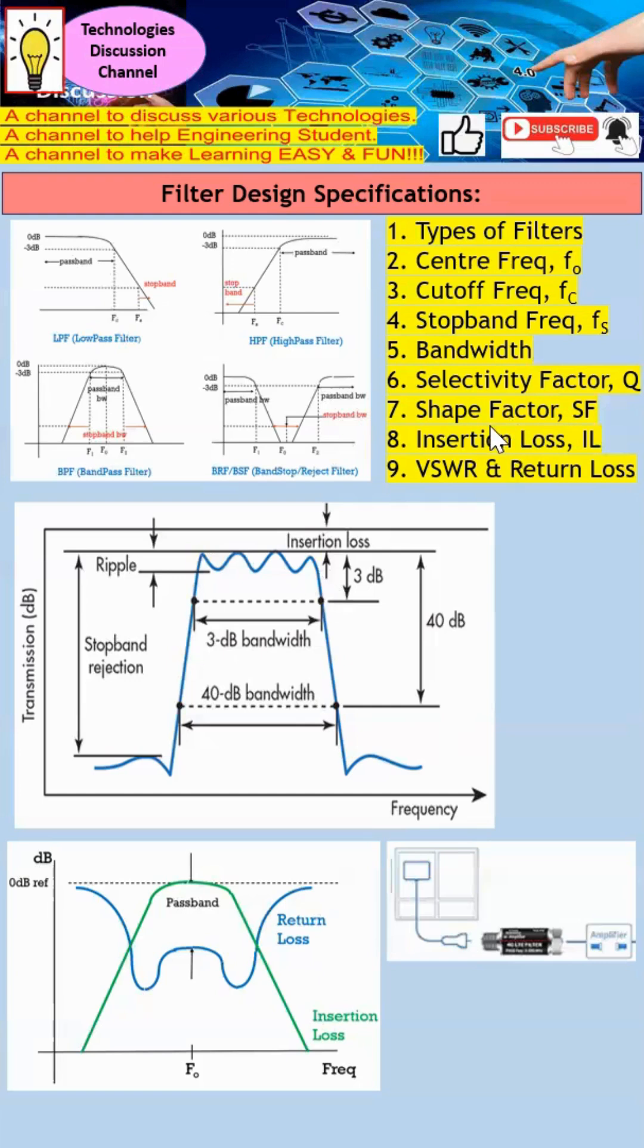Insertion loss. When we actually insert anything in between, for example, for this case here, I insert a band pass filter in between amplifier and antenna, you're bound to have some form of loss. This is what we quantify as insertion loss. Without the filter, I will have the signal at this level. When I actually introduce the filter, the signal actually reduces. So this is what we quantify as insertion loss.